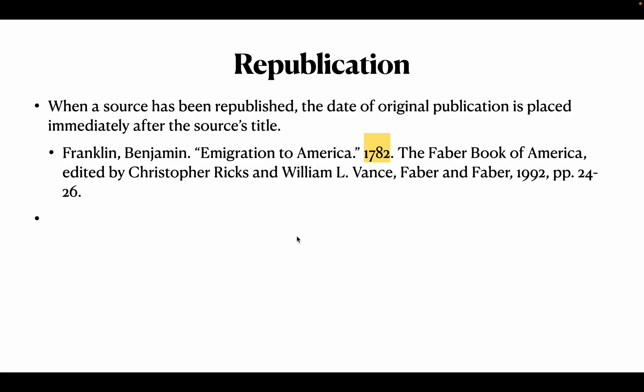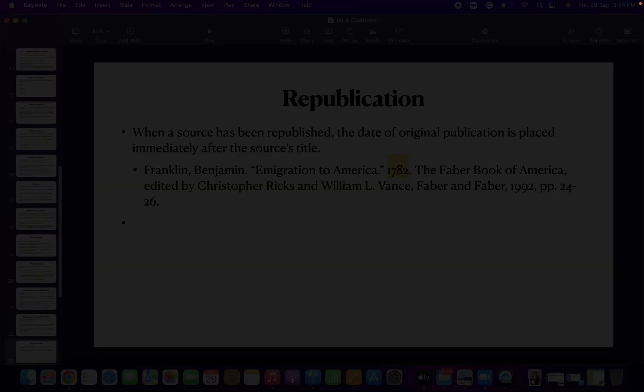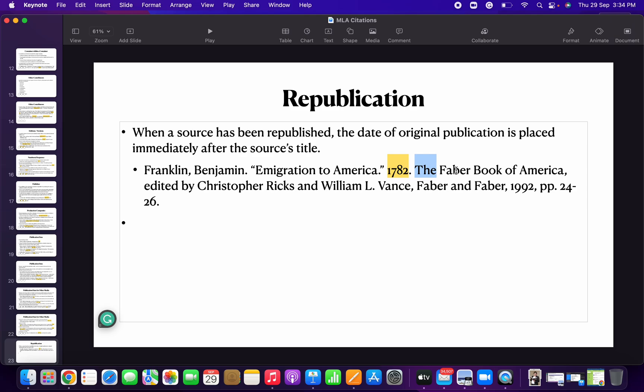If a source has been republished, the date of original publication is placed immediately after the source title. Benjamin Franklin originally wrote 'Information to Those Who Would Remove to America' in 1782, but you are looking at a 1992 edition. First give 1782 immediately after the title of the source. Also remember, the title of the book should be italicized.